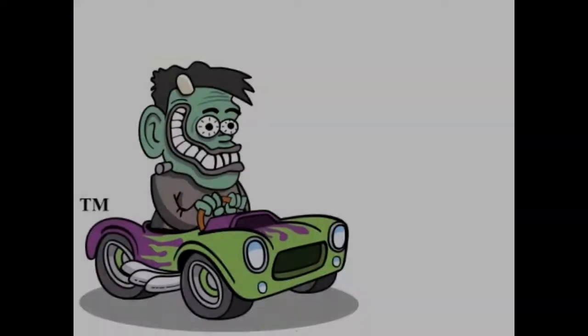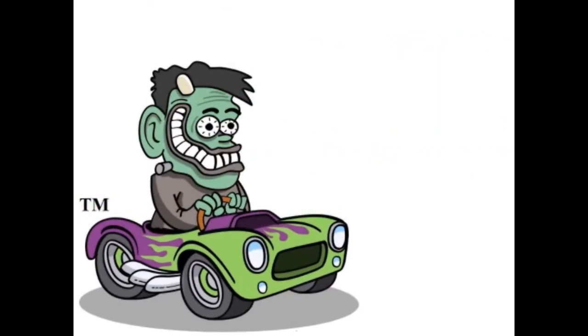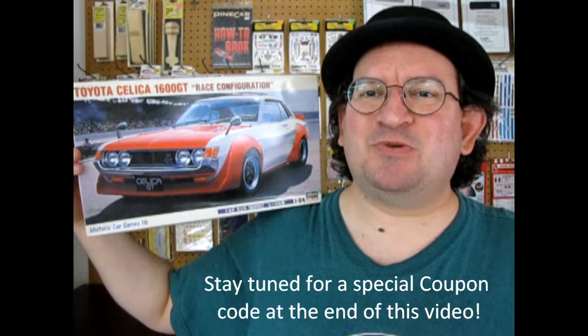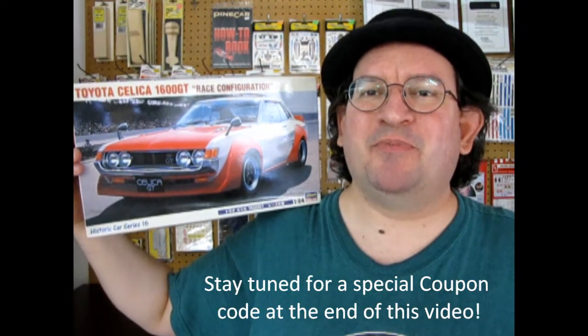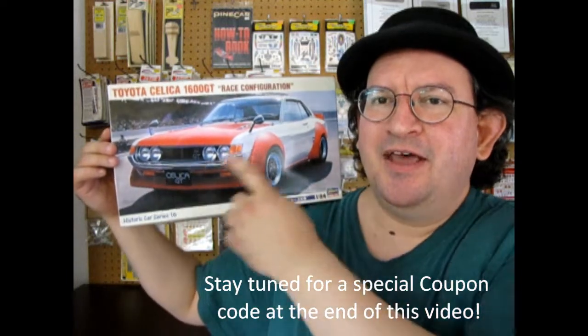The 1970 Toyota Celica 1600 GT by Hasegawa, coming up next. Hello once again Toyota lovers and race car fans. Welcome back to another Monster Hobbies unboxing video where today we're going to be looking at a Hasegawa kit. This is the 1970 Toyota Celica 1600 GT in the race configuration.